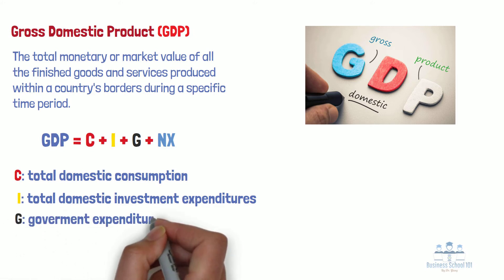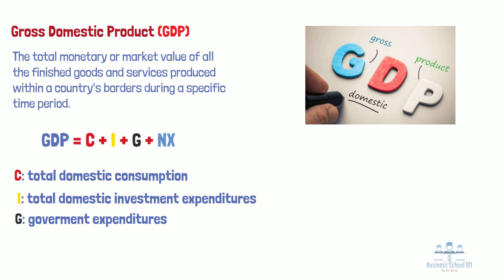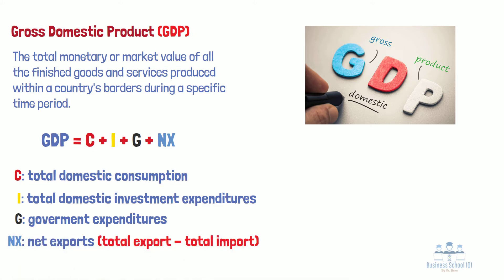G refers to government expenditures. These include any physical products the government has purchased, like fire trucks or aircraft carriers, investments the government has made, and salaries of government employees, such as salaries of judges, police officers, and teachers in public schools and colleges. However, government expenditures don't include any payments or programs like welfare or social security. NX refers to net exports — the total of goods and services produced domestically and sold to foreign countries minus goods and services produced by foreign countries that are sold domestically.